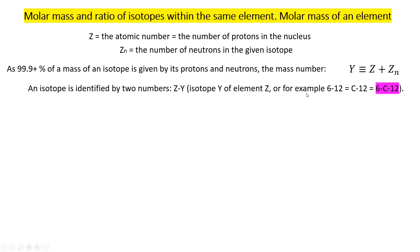Let me remind you of the mass number, denoted Y, which is the sum of the atomic number (number of protons) and the number of neutrons in the isotope. In this way we can identify all isotopes using two numbers Z and Y: Z identifies the element and Y identifies the isotope through its mass number. For example, C12 can be called the 6-12 isotope, or 6C12, giving all information needed.